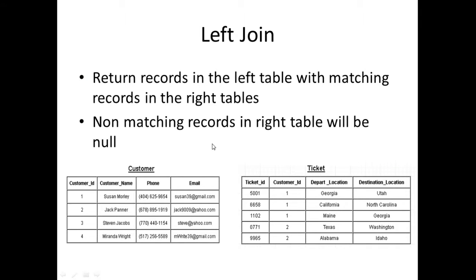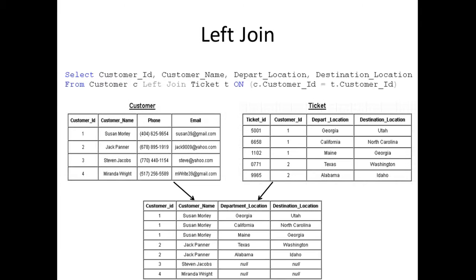Next, I want to talk about a left join. A left join is when you return all records from the left table with matching records in the right table. Non-matching records in the right table will be null. This is the query we're going to run to perform a left join. As far as all records go, we're going to return records one, two, three, and four — all records from the left table are going to be returned with matching records in the right table.